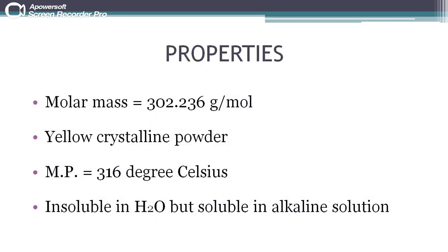Amongst the properties, the molar mass of quercetin is 302.236 g per mole. It is a yellow crystalline powder with a melting point of 316 degrees Celsius. Quercetin is insoluble in water; however, if we add a base to water, then quercetin is soluble in it.